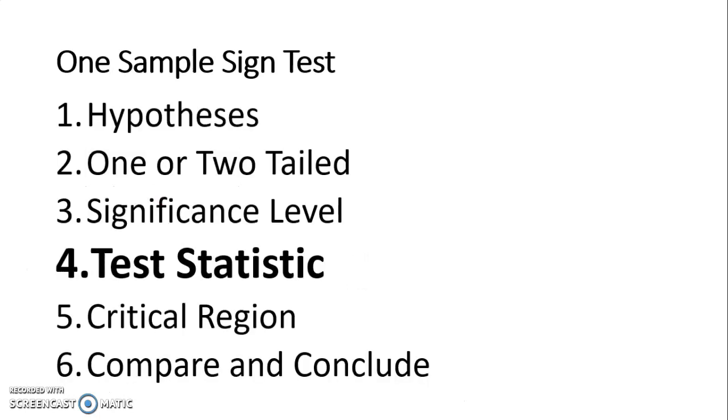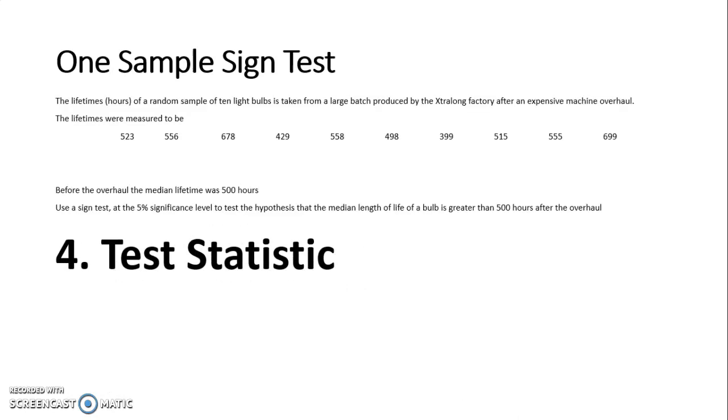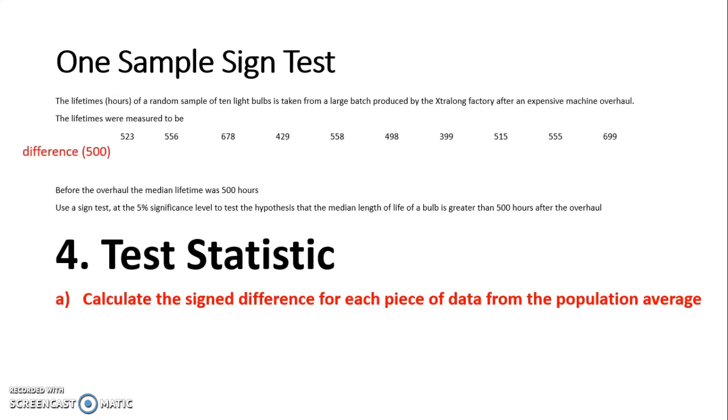Next, we calculate the test statistic. There are a few steps to follow when calculating the test statistic. The first one is we're going to calculate the signed difference for each piece of data from the population average. This is a little bit more than you actually need to do for the sign test, but it's good practice in case you then have to do a Wilcoxon later on. I'd always recommend calculating the difference because it's only going to take you an extra minute. So let's work out the difference for each of these 10 light bulbs compared to 500, because that was the median.